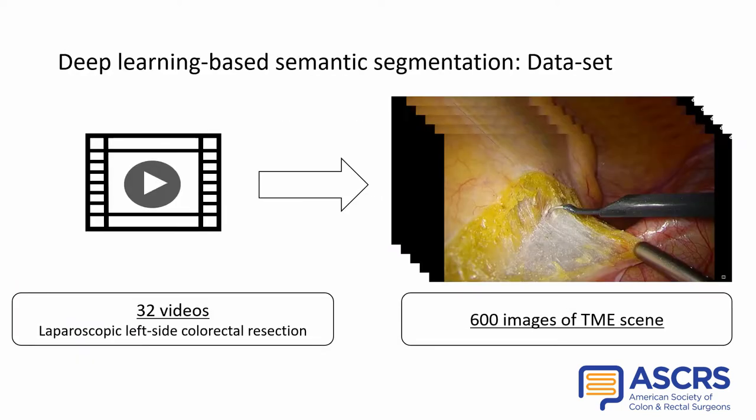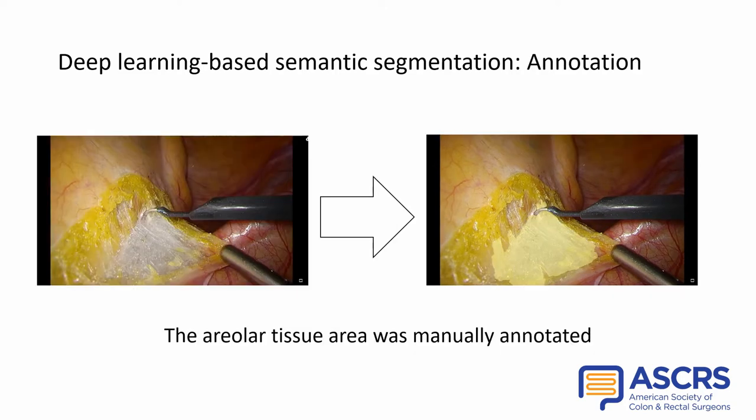A total of 32 cases of laparoscopic left-side colorectal resection were randomly extracted and included in the study. 600 intraoperative images capturing TME scenes were randomly extracted, and the areolar tissue area was manually annotated in each extracted image by a colorectal surgeon.